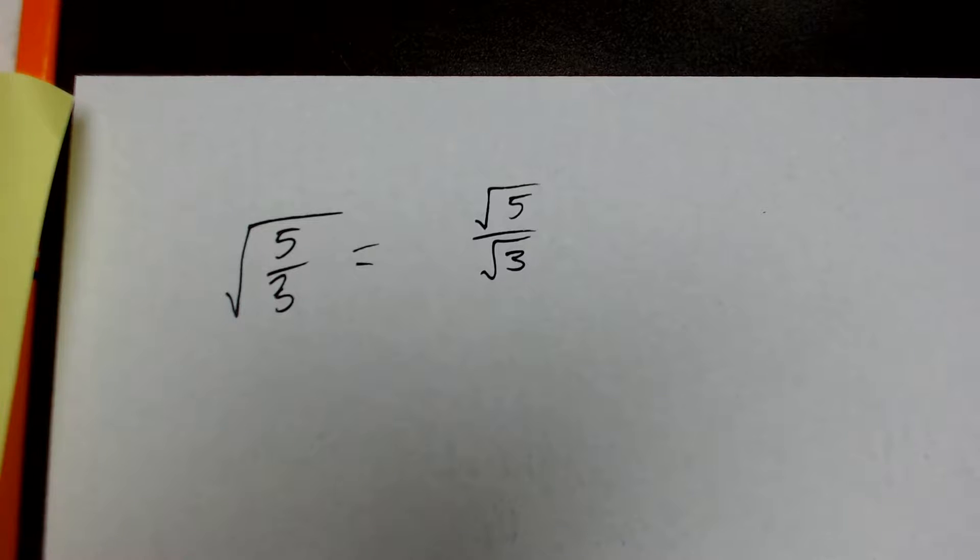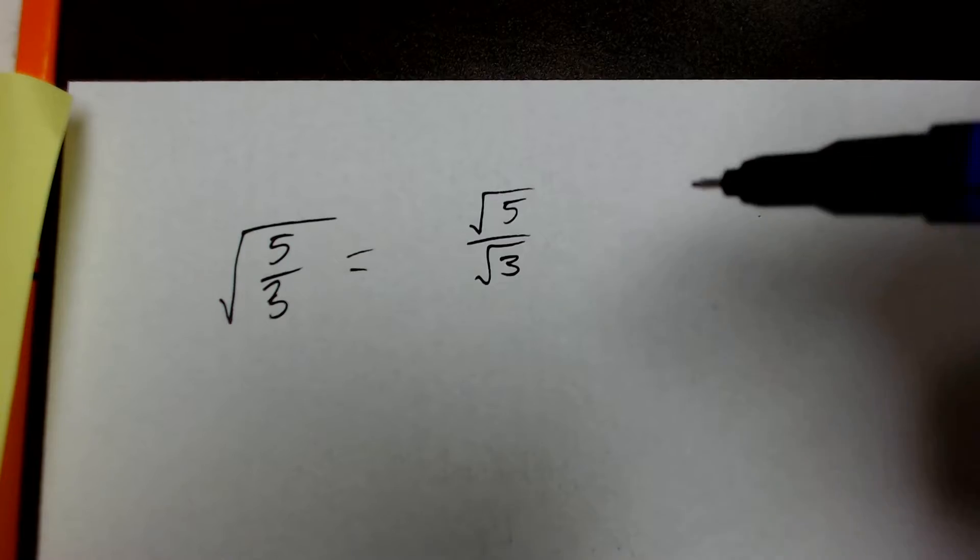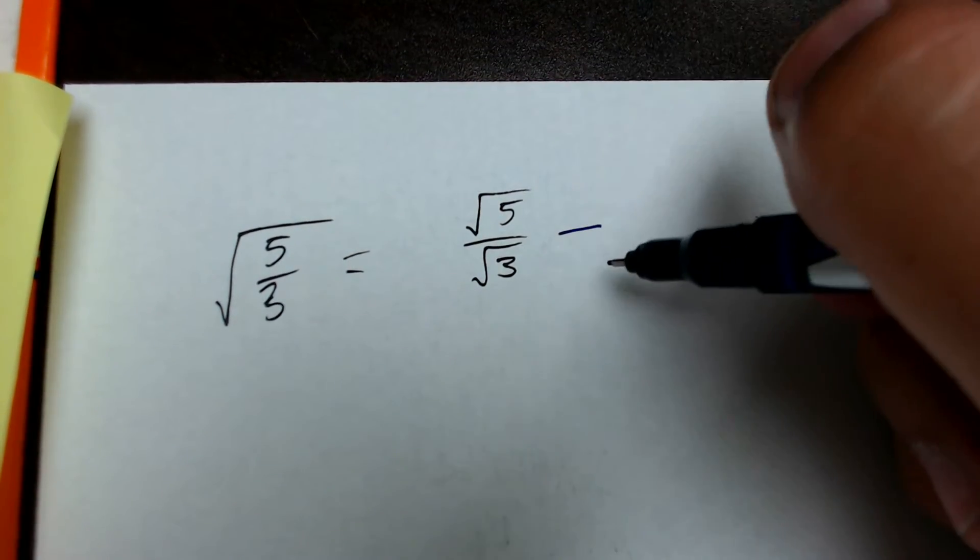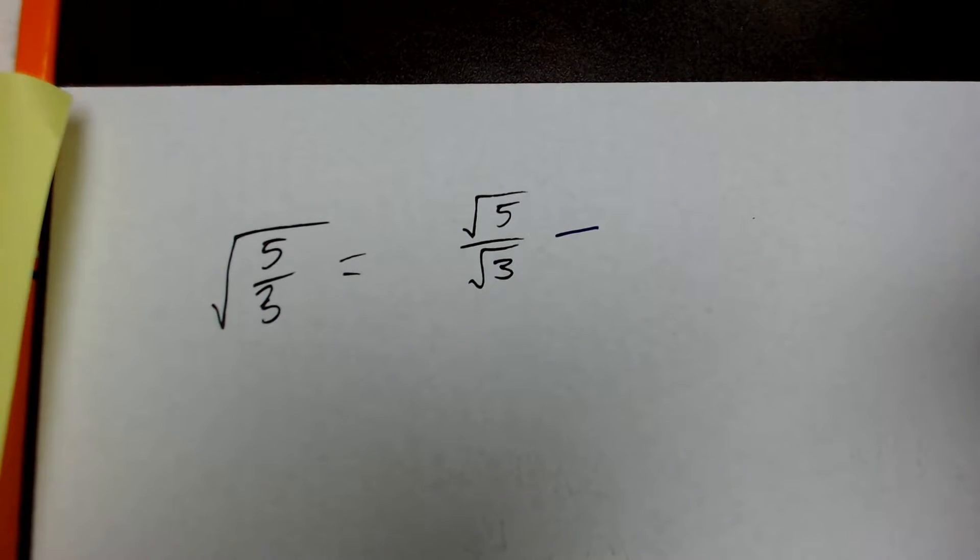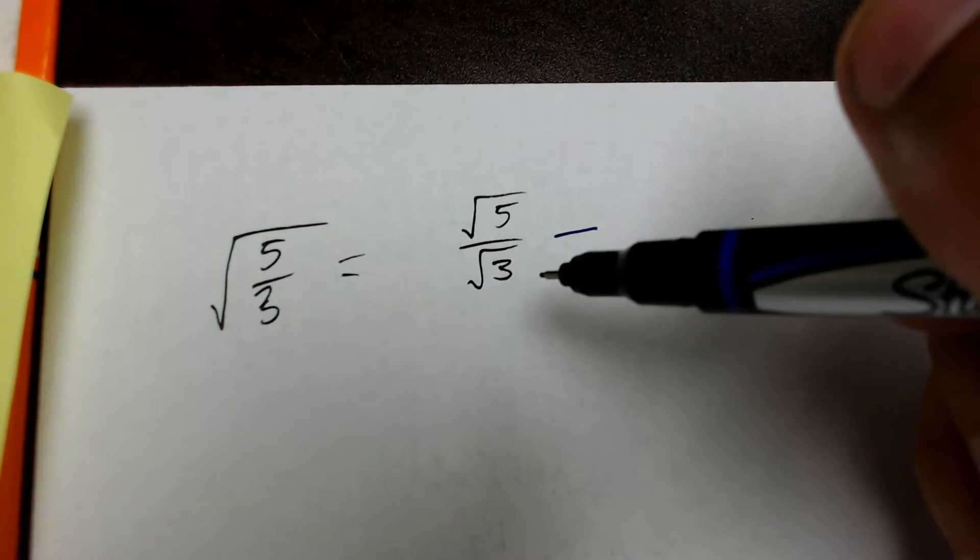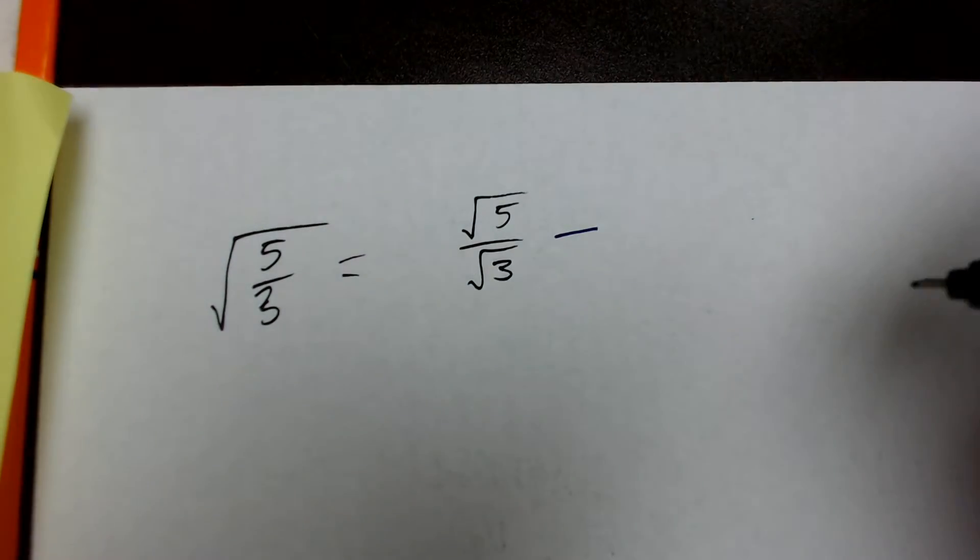Now, how do we make the denominator a rational number? Well, we're going to use one of our favorite rules for fractions, which is to multiply by the number 1. So, if we multiply by the number 1, we can make a fraction, and as long as we put the same number in the numerator and the denominator, we're multiplying by the number 1 and not changing the number. So, now the question becomes, what can I multiply the square root of 3 by that will make it a whole number? And the answer is itself.